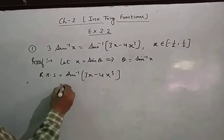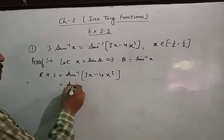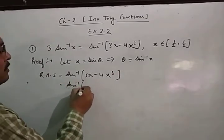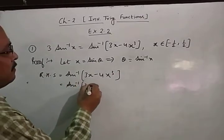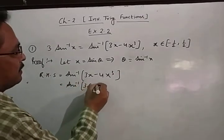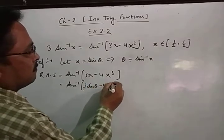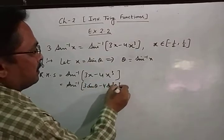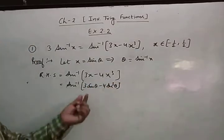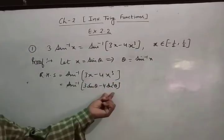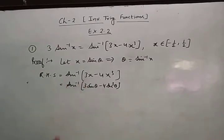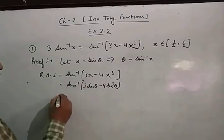Now, put x = sinθ in the RHS. Then it will become sin⁻¹(3sinθ − 4sin³θ), which is the formula for sin3θ.